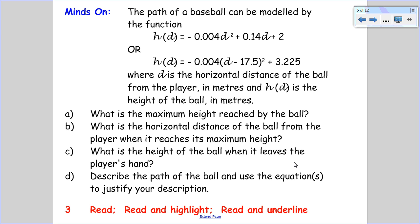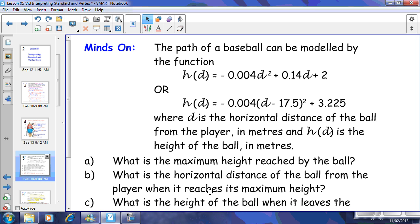Part A asks what is the maximum height reached by the ball. Part B asks what is the horizontal distance of the ball from the player when it reaches its maximum height. Part C wants to know what the height of the ball is when it leaves the player's hand. And Part D wants us to describe the path of the ball and use the equations to justify our description.